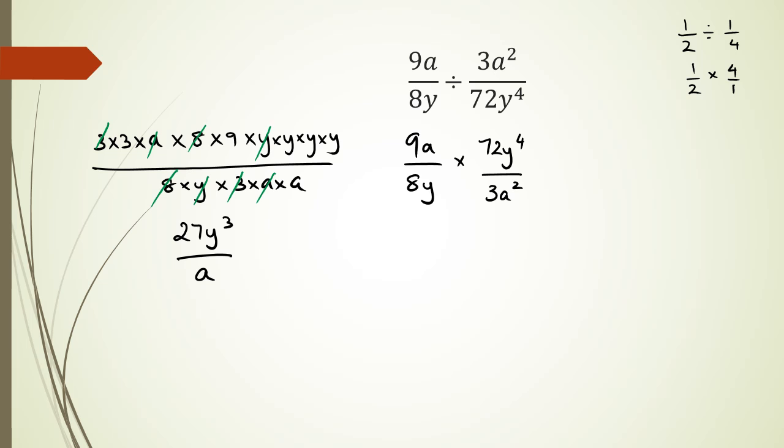So if I was to do this the quick elimination way, then I have 9a times 72y to the power of 4 over 8y and 3a squared. So eliminating my 9 first, 9 divided by 3 is 3, 3 divided by 3 is 1. 72 is an 8, so 72 divided by 8 is 9, and 8 just cancels out itself. Then my y disappears, and this 4 becomes a 3.